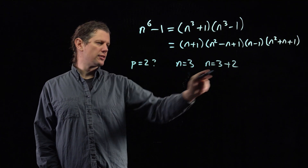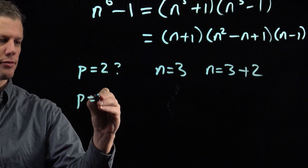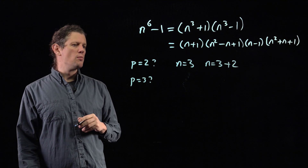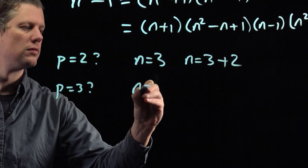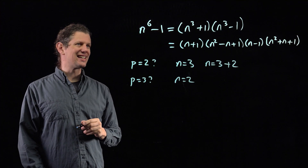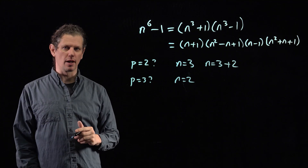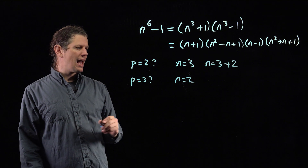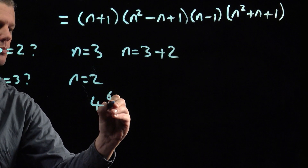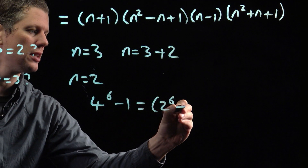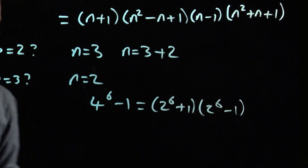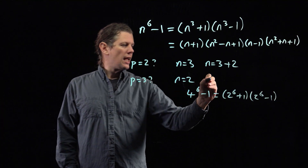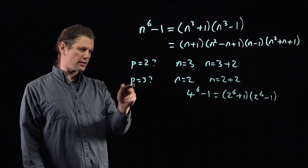The minimal n is 3, and then n = 3 + 2 also works. What happens if p is 3? If n = 2, this is 2⁶ - 1. 2⁶ is 64, so 2⁶ - 1 is 63, which is 21 × 3. So n = 2 is the minimal n greater than 1 for which p divides n⁶ - 1. However, 4⁶ - 1 equals (2⁶ + 1)(2⁶ - 1), and so 3 divides 4⁶ - 1 because it also divides 2⁶ - 1. Therefore n = 2 + 2 also works, so p = 3 satisfies the problem as well.